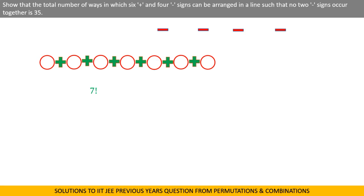But exercise caution here. All positive signs are identical, therefore we have to divide it by 7 factorial.